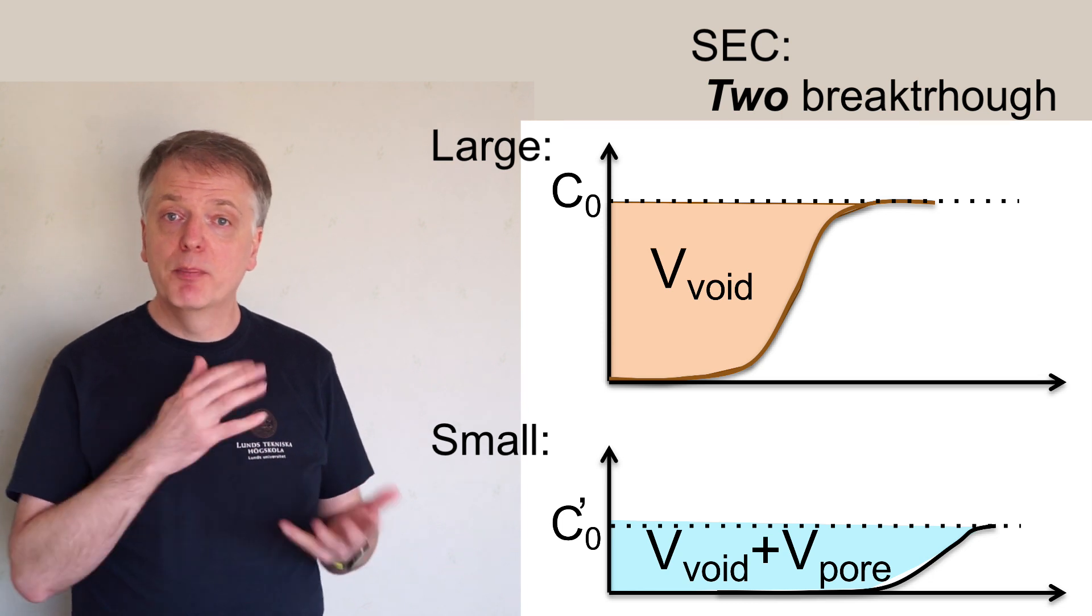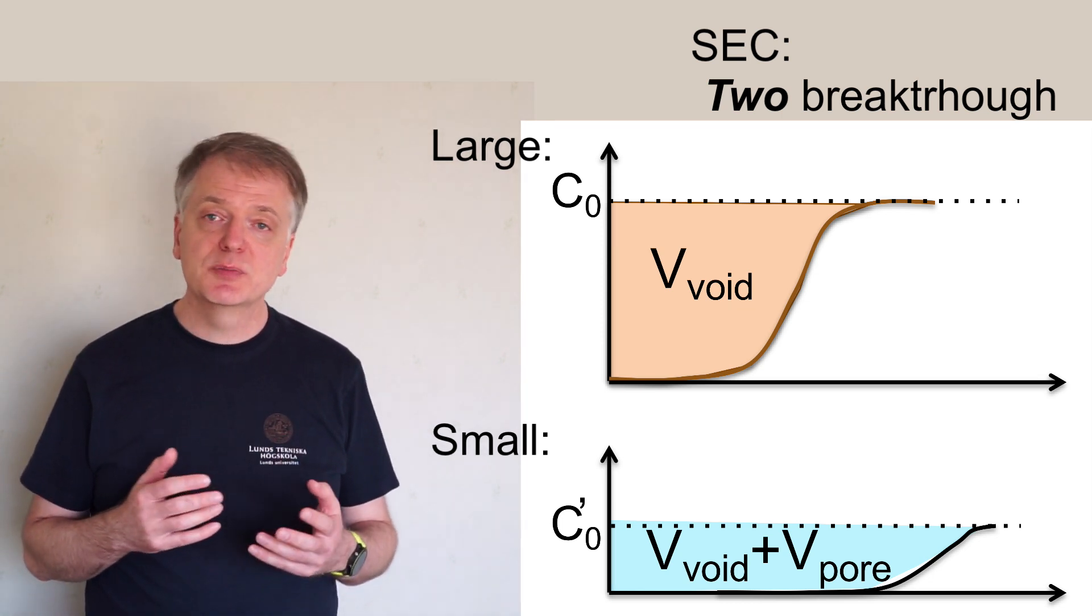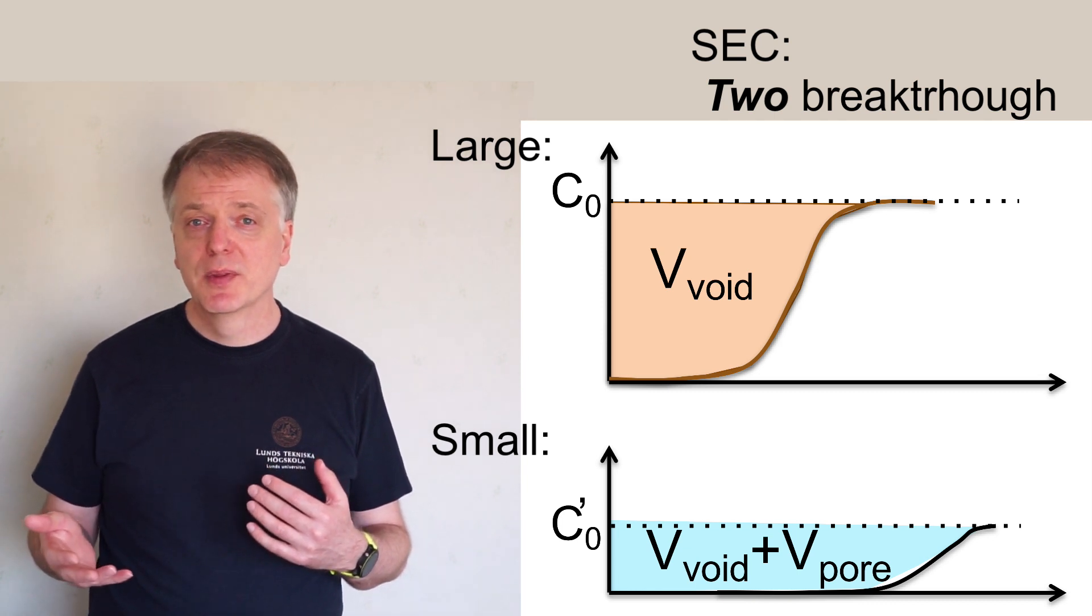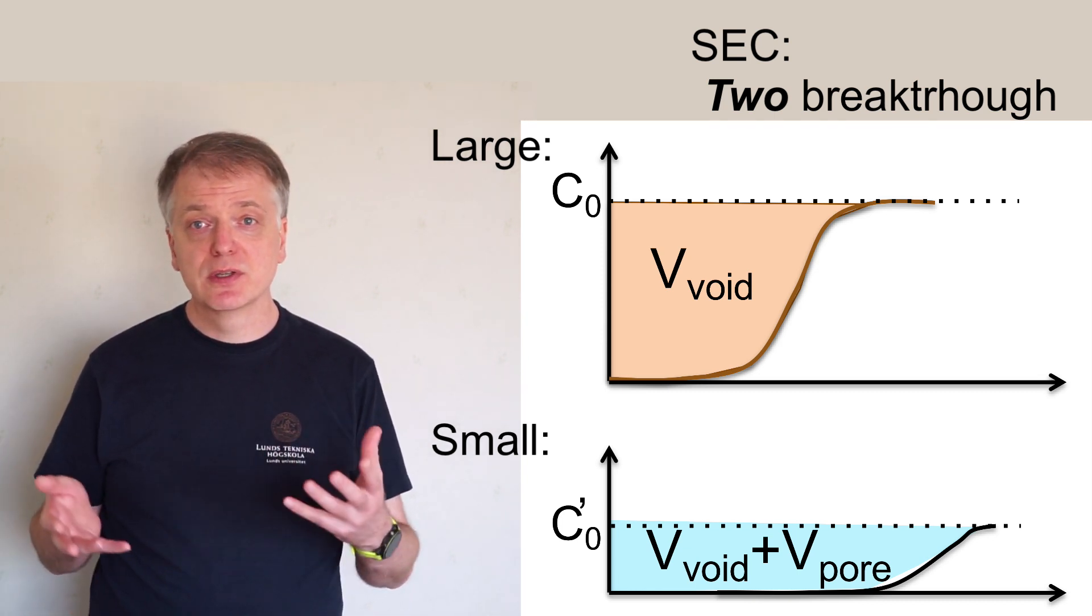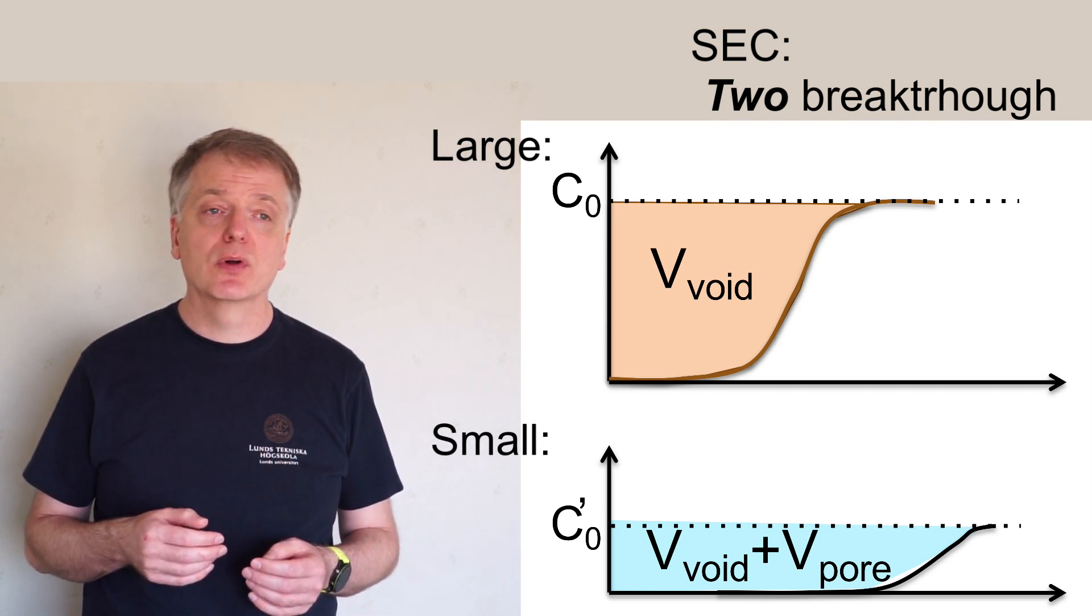The area above the breakthrough curve for the large molecule is proportional to the void volume, since the large molecules can only be present in the void volume of the column.